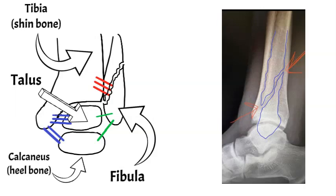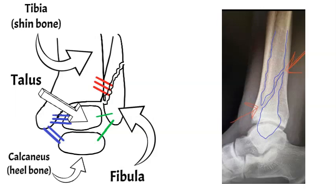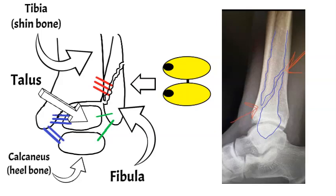To get a better idea of how the X-ray matches what the ankle looks like from the front, you just need to imagine that you're looking at the drawing from the side view. That's what the X-ray is actually showing, to give you a better picture of how you're looking at the fracture.